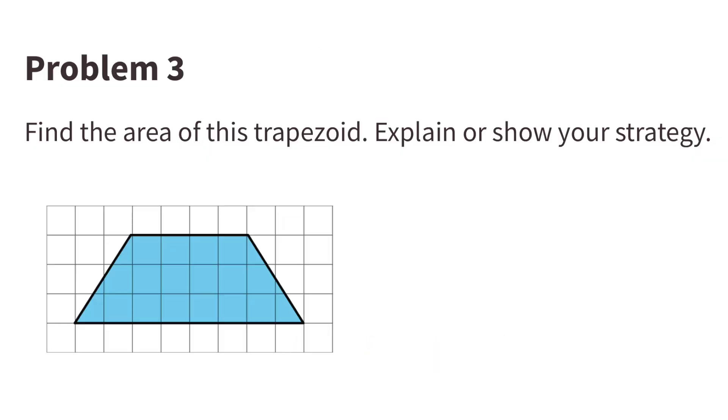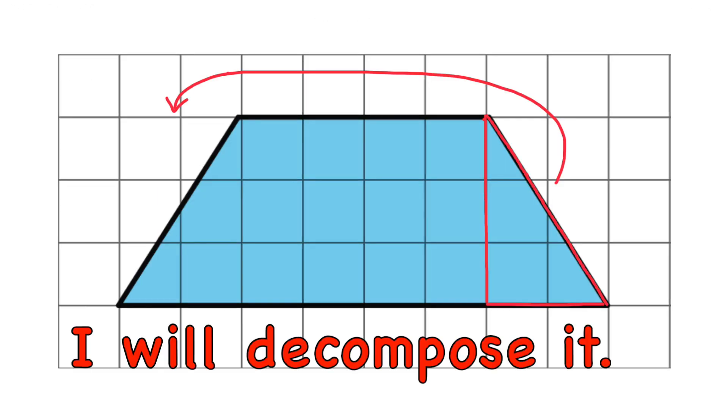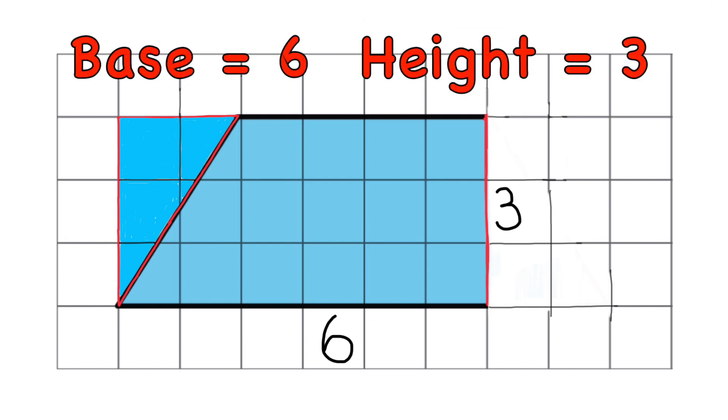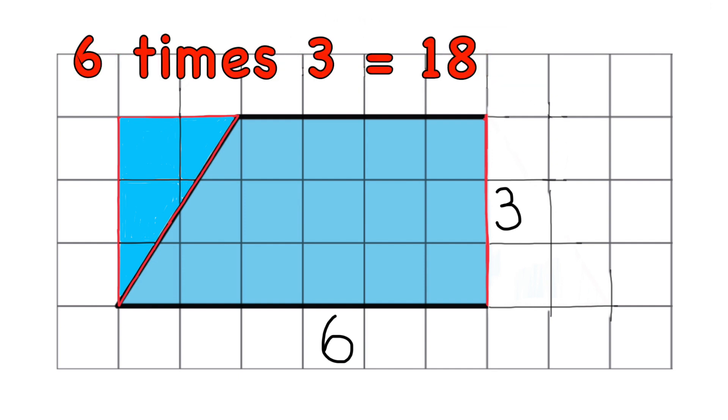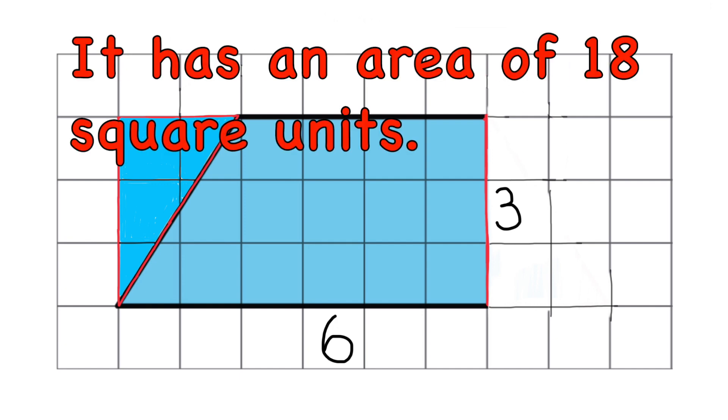Number 3. Find the area of this trapezoid. Explain or show your strategy. I will decompose it and rebuild it. Now it's a rectangle with a base of 6 and a height of 3. 6 times 3 equals 18. Count the squares. It has an area of 18 square units.